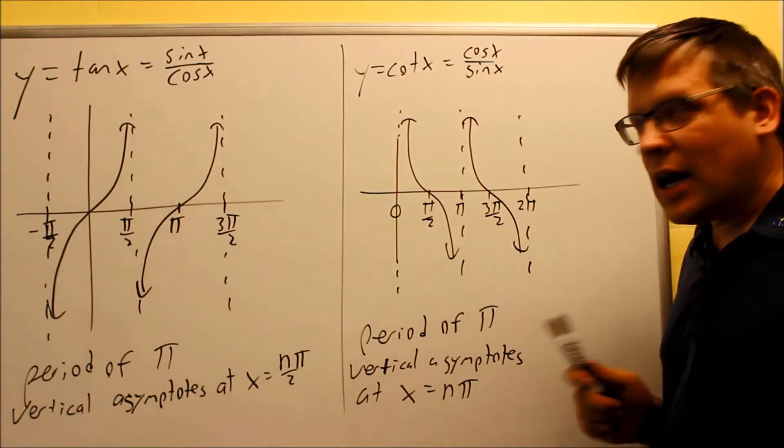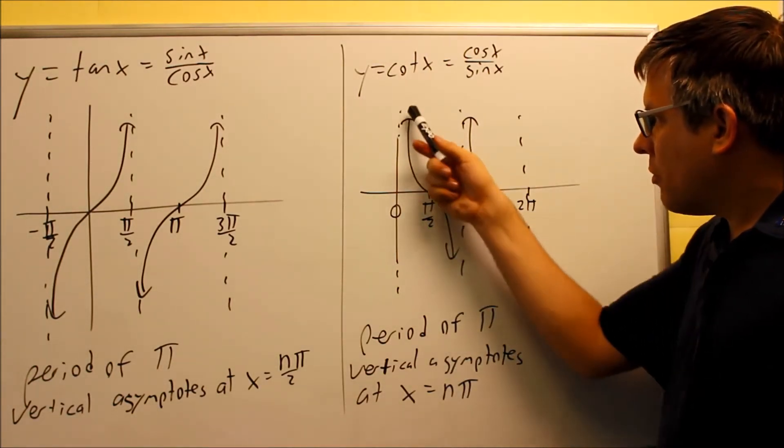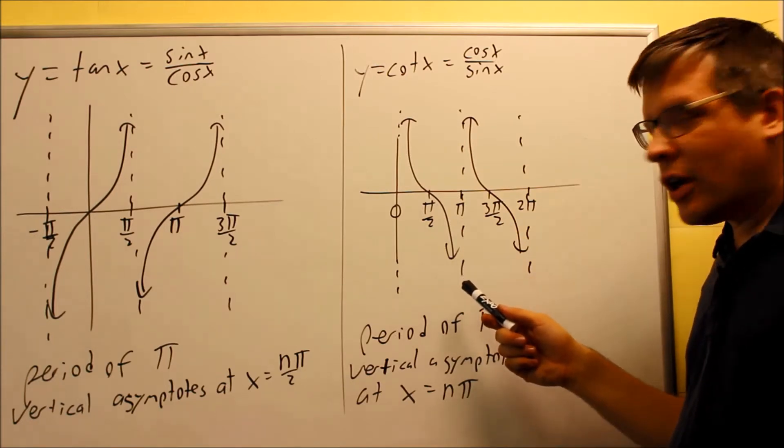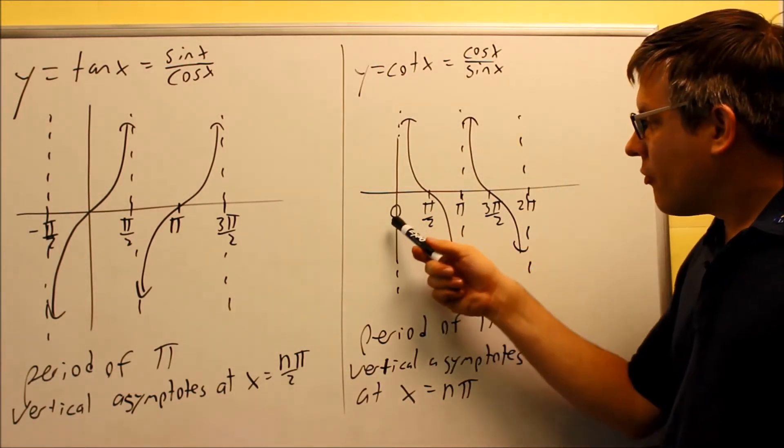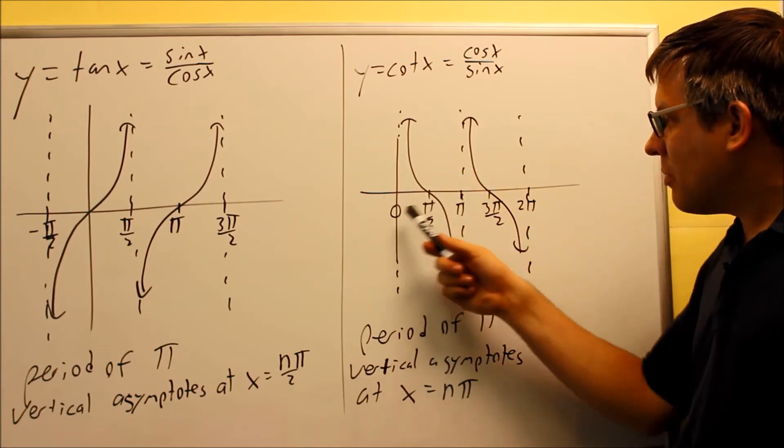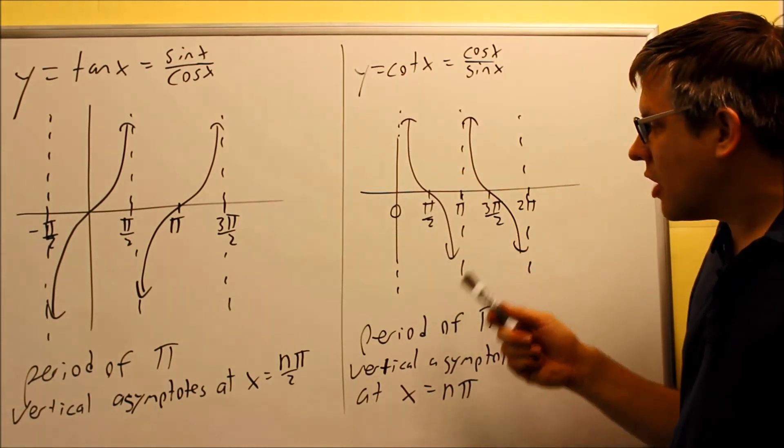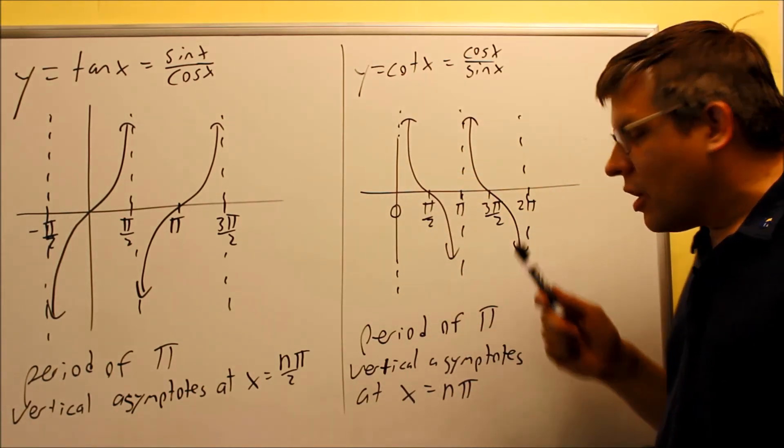Again, your period is going to be pi. Here's one cycle, one shape. It goes down and ends down there like that. Then the whole thing starts over again. From 0 to pi, that's the amount of time it takes for that cycle to repeat itself. So, again, that's why we have a period of pi.